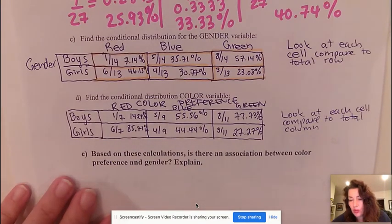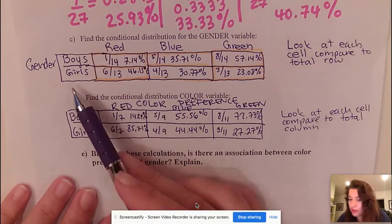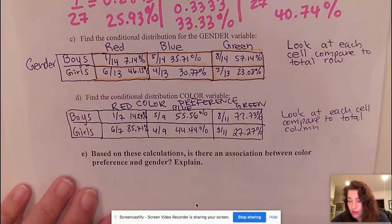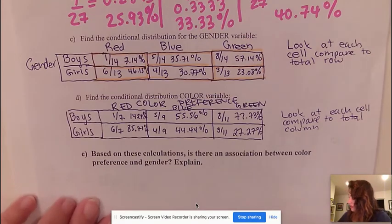You always want to answer a question first by saying if there is an association or if there is not an association. Then what you want to do is use context - so what are we talking about? We are talking about gender versus color preferences. The last thing you want to use in your statement is statistics to state whether there is an association or if there isn't. If there is a big gap in the percentages, probably a bit more than 5%, you would say yes there is an association. If the percentages are very similar then you say there is not an association.